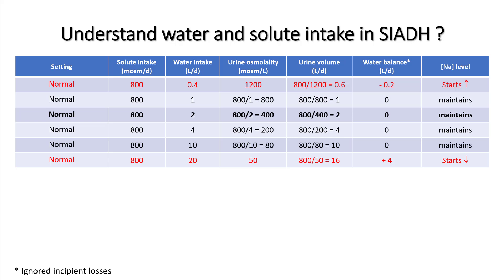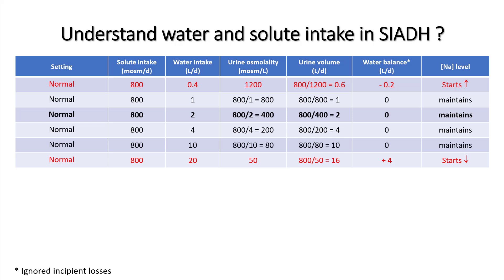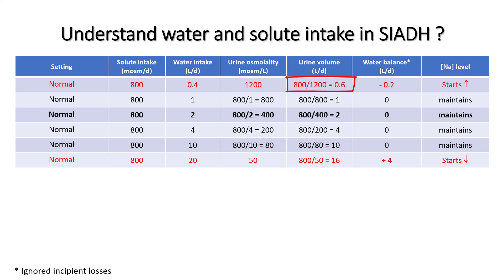The lowest urine osmolality a normal person can reach is 50. If he drinks 20 liters, he can urinate a maximum of 16 liters, leaving a positive water balance of four liters — dropping sodium. This is what happens in psychogenic polydipsia. His maximum urine osmolality is around 1200; drinking only 0.4 liters creates a negative water balance, causing sodium to rise and hypernatremia.